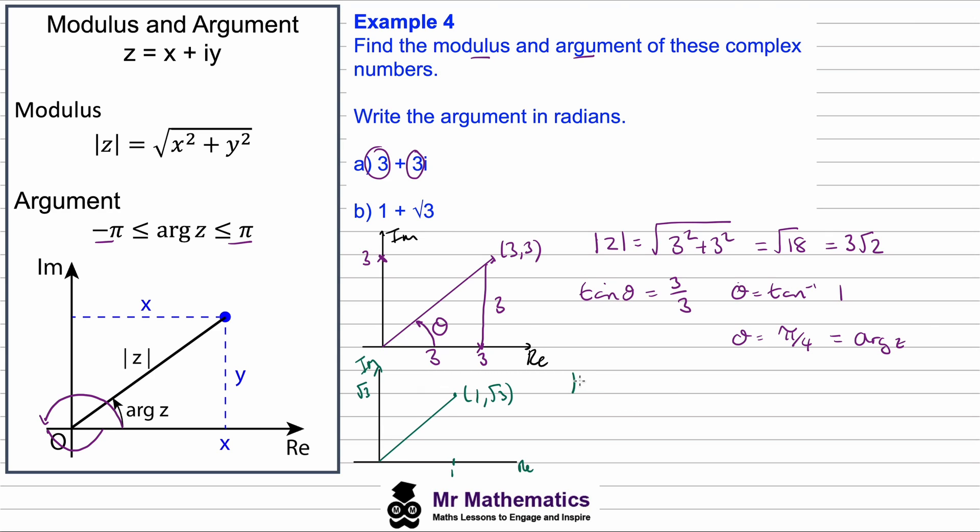We'll have the coordinates of (1, √3) coming from the origin. So the magnitude or modulus using Pythagoras's theorem will be the square root of 1² + (√3)². Well, 1² is 1, √3² is 3, so the root of 4 will give us a modulus of 2.